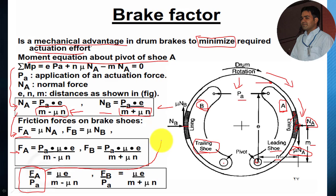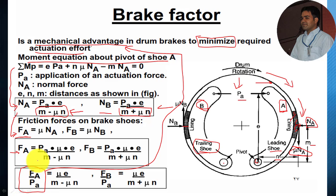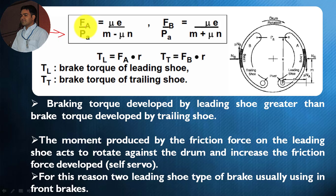Now Fa divided by Pa indicates the mechanical advantage — because mechanical advantage can be defined as the output produced divided by the input provided. The friction force is the output force and Pa is the input, so this ratio is the mechanical advantage. For the leading shoe: mechanical advantage equals mu times e divided by (m minus mu times n). For the trailing shoe: Fb divided by Pa equals mu times e divided by (m plus mu times n).